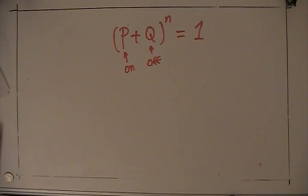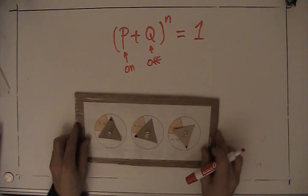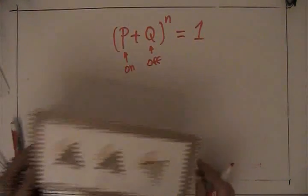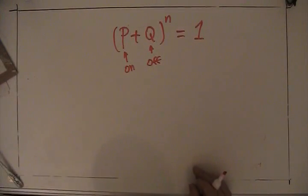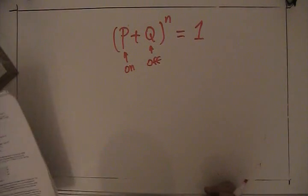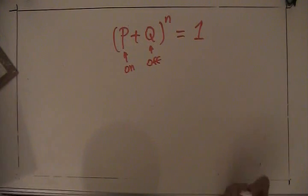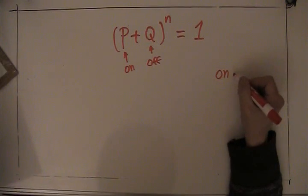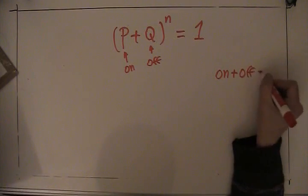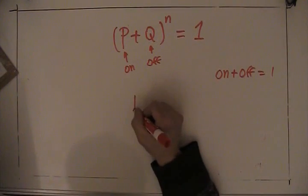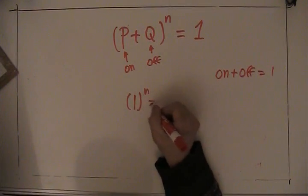Okay. We'll be using this distribution today to describe what happens when we do a large number of trials of spins. This will be our experiment, by the way. Well, this is a rather strange argument. The probability of something being on plus the probability of it being off equals one. So this argument is actually saying that one to the N equals one.